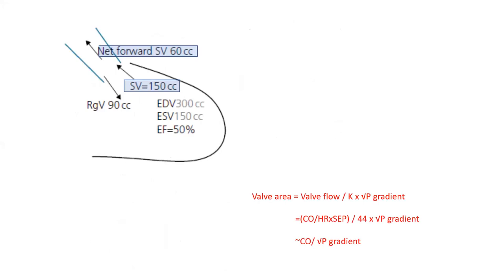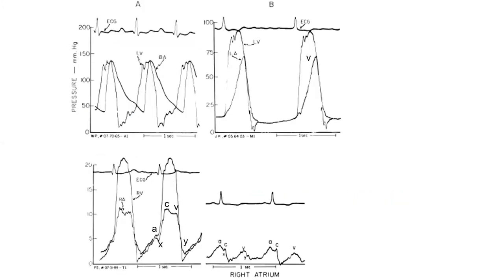Here are more summary tracings. In this LV-brachial artery tracing, there is no AS, but the brachial artery touches the LV in diastole — diastasis again — with no dicrotic notch and a massively wide pulse pressure. This is likely chronic decompensated AI rather than acute AI, given the significantly widened pulse pressure. These features confirm severe, massive AI.